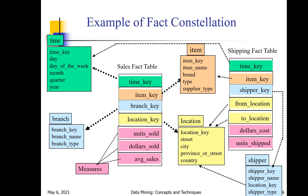The sales fact table surrounded by some dimension tables looks like a star. The shipping fact table surrounded by some dimension tables also looks like a star. This collection of stars is nothing but the fact constellation schema, also called the galaxy schema.